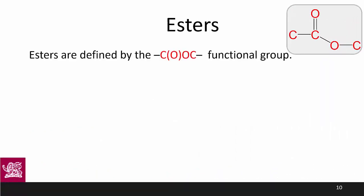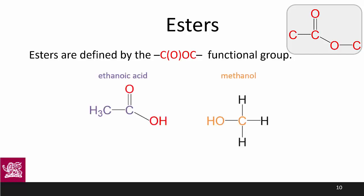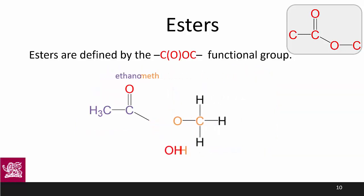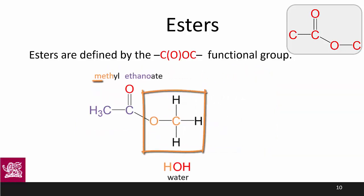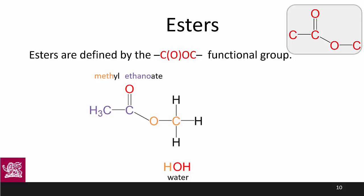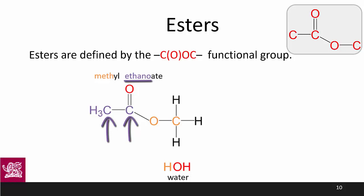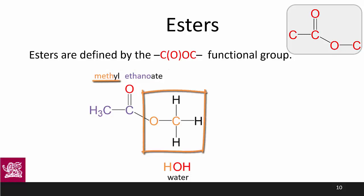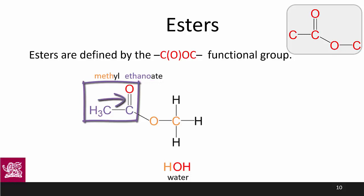Next up we have esters, which are a very interesting structure. You make an ester by mixing an alcohol with a carboxylic acid and removing water. When naming, the orange section here becomes the first part of the name and its suffix is modified to '-yl'. The suffix of the chain with the double bond to oxygen becomes '-oate'. In this case we have two carbons on that side, making it '-ethanoate'. So this particular molecule is called methyl ethanoate. The first name chain is the one after the single bond oxygen and the second name chain is the one with the double bond oxygen.